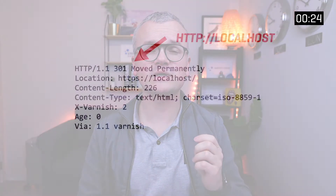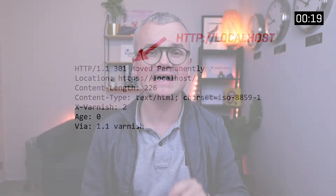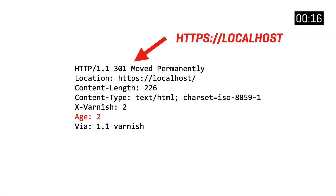We've just solved one issue — here's the next. Imagine that the first request you're sending is an HTTP request. The 301 redirect gets returned but also gets stored in the cache with no distinction between the protocol. So if the next request is an HTTPS request, you still get the 301.